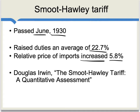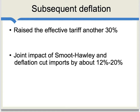The estimates to follow come from a very good paper by Douglas Irwin called 'The Smoot-Hawley Tariff: A Quantitative Assessment.' There was in the 1930s some subsequent deflation, and a lot of the Smoot-Hawley Tariff was defined in nominal terms. This deflation, combined with the way the tariff was written, raised the effective tariff another 30% above and beyond what was originally written into the bill. Taking the joint impact of the original bill and the subsequent deflation, Irwin estimates that cut imports into the United States by about 12 to 20%.